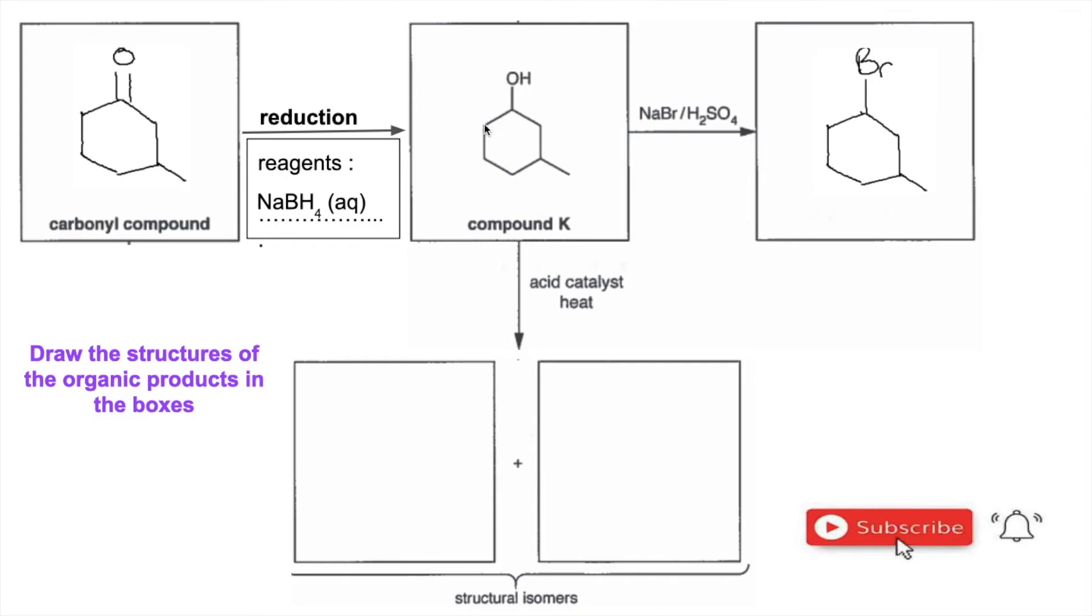The H has to come from an adjacent carbon to the OH group. So, we can either take the H from here, and we'll put a double bond there, or we take the H off here, put a double bond there. So, the two structural isomers look like that and that.